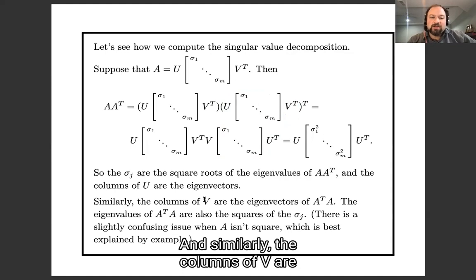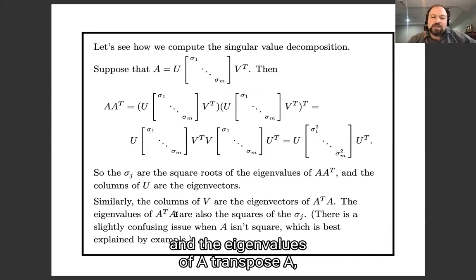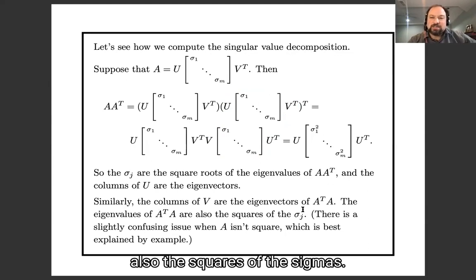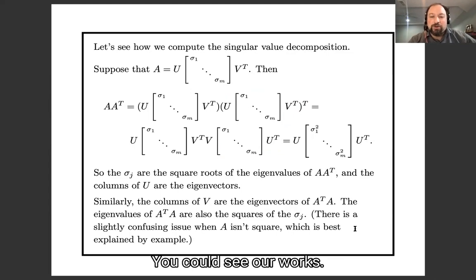And similarly, the columns of V are the eigenvectors of A transpose A. And the eigenvalues of A transpose A are also the squares of the sigmas. And this is a little bit confusing when A is not square. And so I've chosen my example to not be square so you can see how it works.